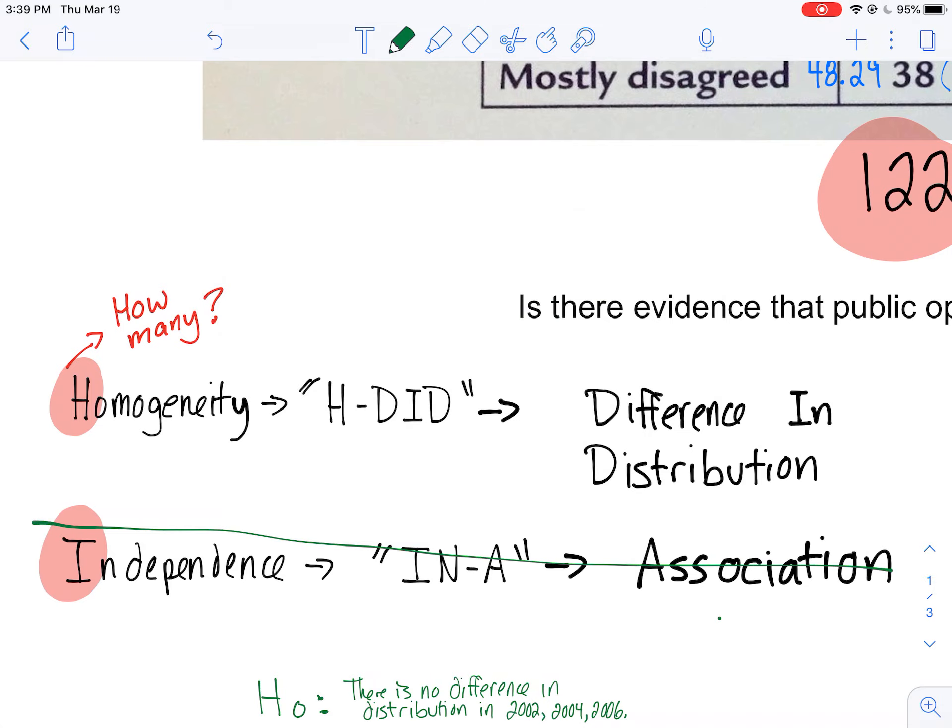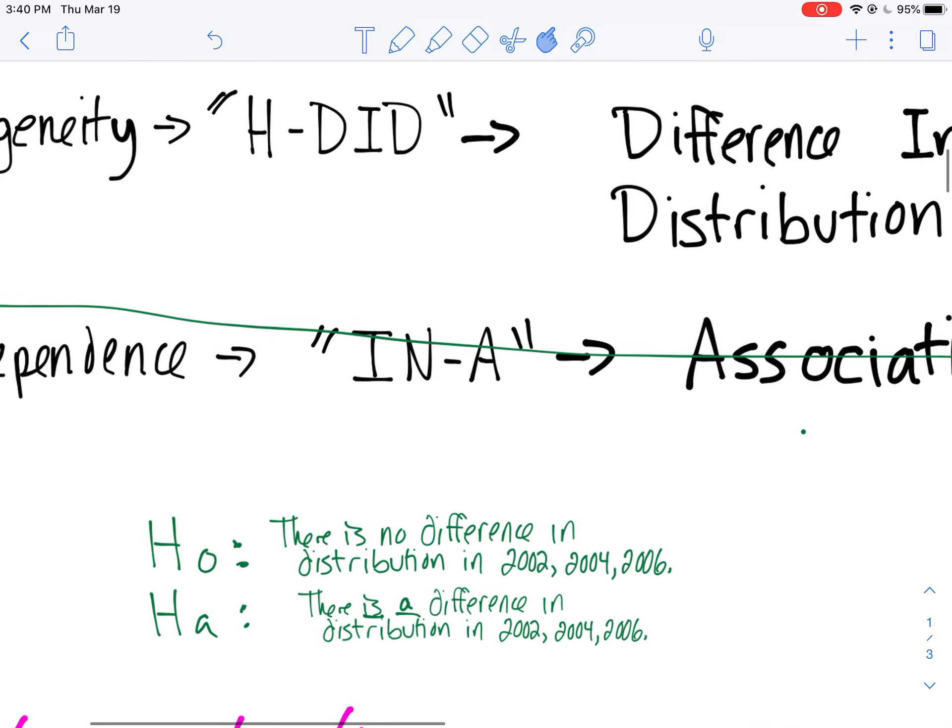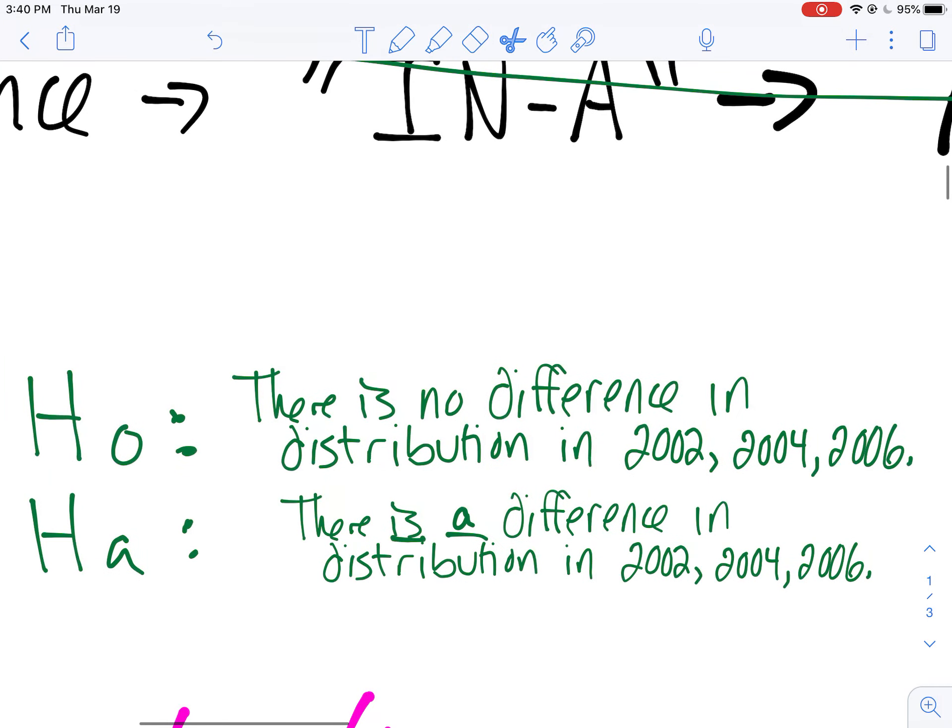And I constructed my null and my alternate down below here. Since I know it's homogeneity, I know it's going to be a difference in distribution. So for my null, I said there is no difference in distribution in 2002, 2004, 2006. You always go into this assuming there is no difference in distribution. We're trying to prove that there is a difference in distribution. Perhaps 2004, 2006 provided us with a different proportion than 2002. We're going to find out.